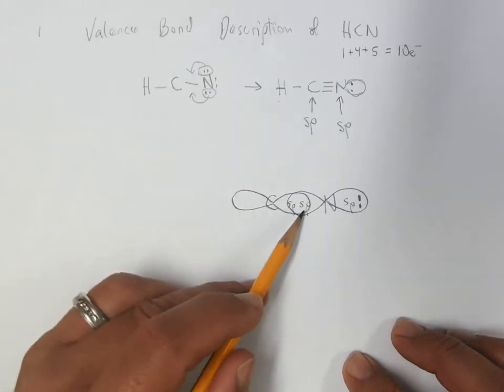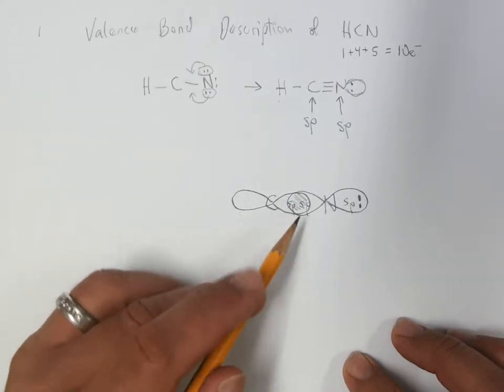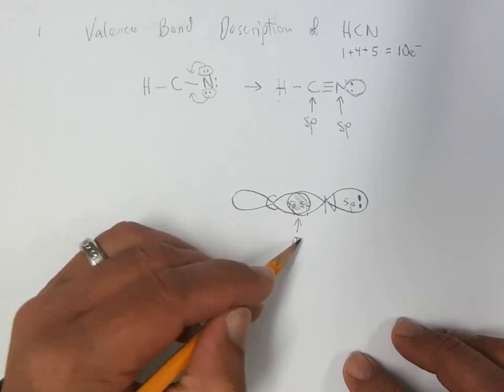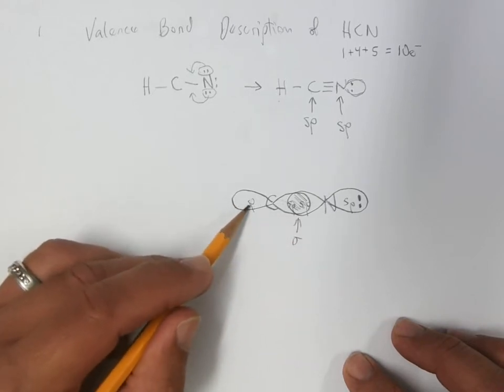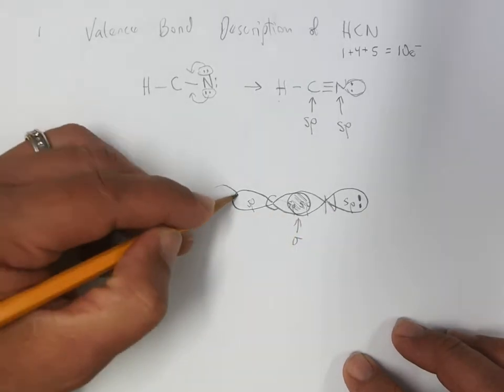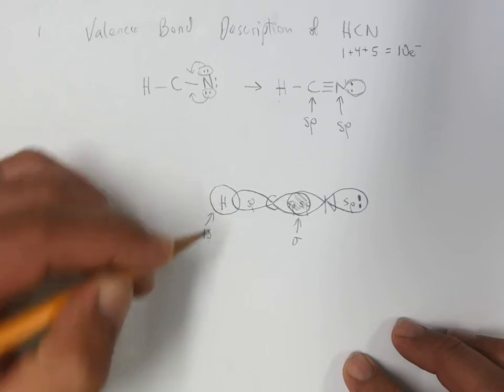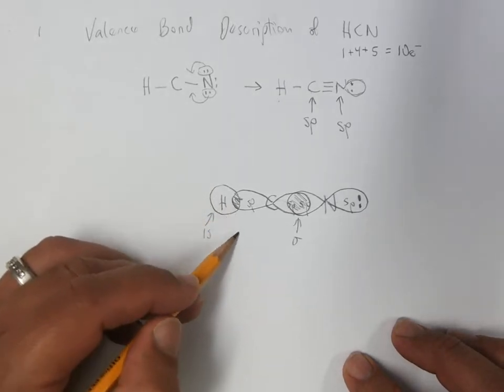This is where sometimes things get a little busy. We have the two sp-orbitals overlapping. So this makes sigma bond. And then carbon's sp-orbital is aimed opposite where the nitrogen is. That puts it in a good position to bond with the hydrogen. And it's using its one s-orbital. There's another sigma bond.